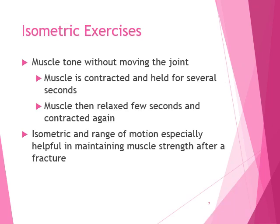Isometric exercises are muscle toning without moving a joint. Contract the muscles—for example, tighten your legs, count to ten, then release. You can do the same with the arms: bring the hands in, hold for ten, tighten, then relax. Patients can perform these themselves. Isometric exercises are especially helpful in maintaining muscle strength after a fracture, even in the hands.